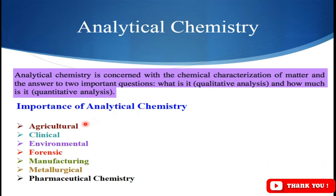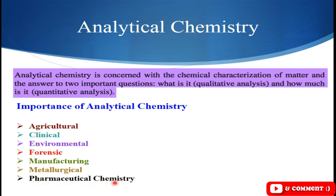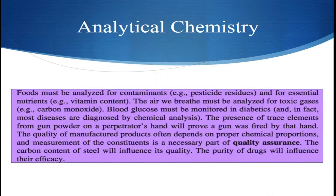Analytical chemistry is very important in different disciplines. It is of utmost importance in agriculture, clinical analysis, environmental chemistry, and forensic analysis. It is also important for the manufacturing of different goods, metallurgical processes — for example, to determine and specify the quantity of iron in steel — and very importantly in pharmaceutical chemistry. Analytical chemistry also finds application in food, pesticides, and biological analysis like monitoring blood glucose levels in diabetic persons.